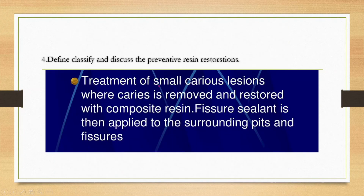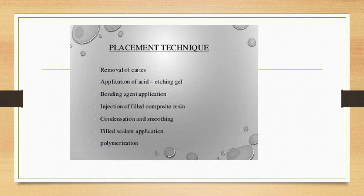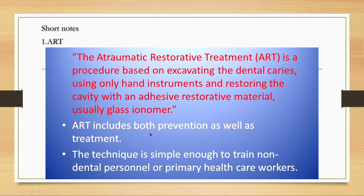PRR is essentially the treatment of small caries lesions where caries is removed and restored with composite resin, and fissure sealant is applied to the surrounding pits and fissures. The placement technique involves: caries removal, acid etching, bonding agent, composite filling, condensing, smoothing, sealant application, and finally polymerization.